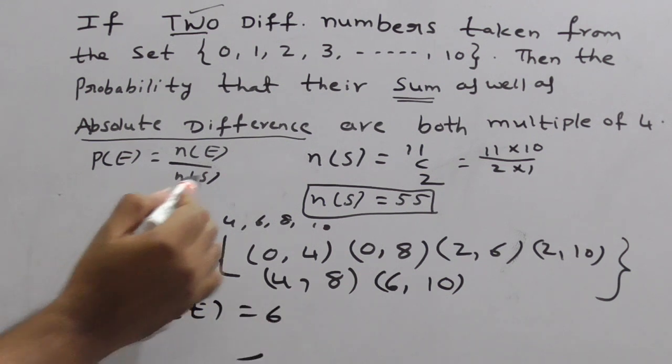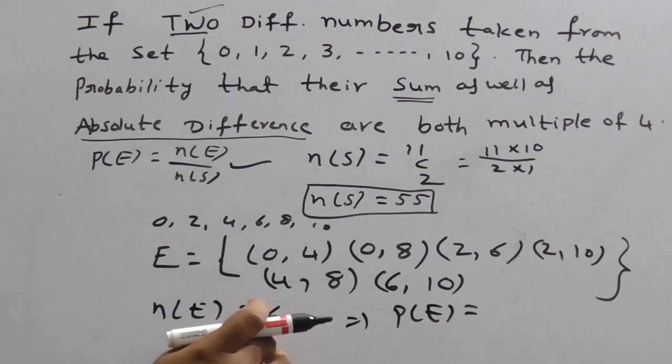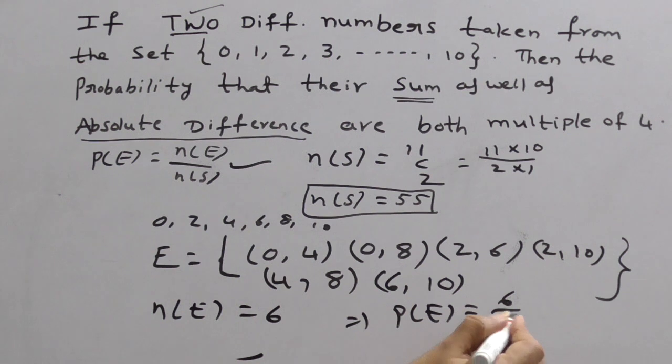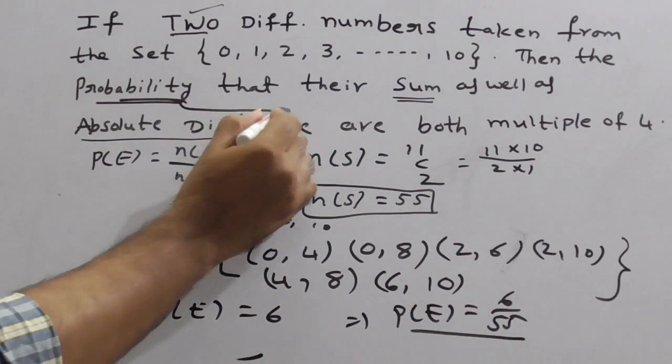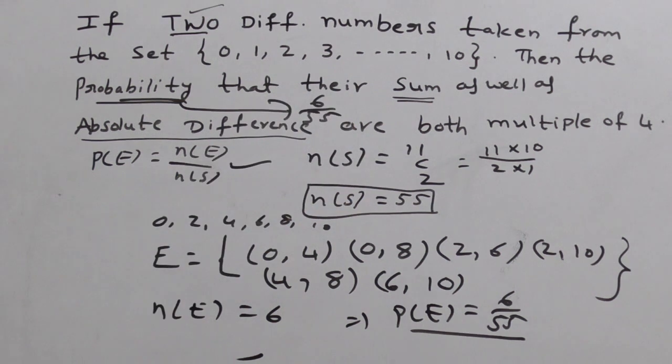What is the basic definition of probability? That is N of E by N of S. Therefore, the probability for this question, P of E, is equal to N of E, how much? 6. By what is N of S? N of S, 55. Therefore, the probability for this question, what is your answer? 6 by 55. N of E is 6. N of S is 55.